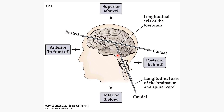Some other terms on this slide: we've got anterior and posterior — in front and behind — and superior and inferior. You can see from the learning outcomes that in basic neuroanatomy, terms like dorsal and superior are used more or less interchangeably, and similarly ventral and inferior.